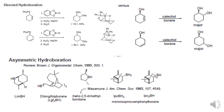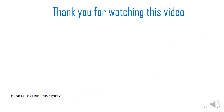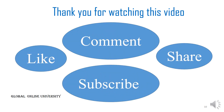Finally, some reagents for chiral asymmetric hydroboration are shown, which are used to obtain exactly the desired stereochemistry in the hydroxylation product. Thank you for watching — please like, comment, share, and subscribe to our channel, Global Online University.